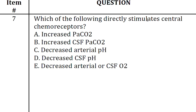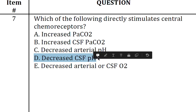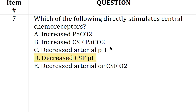The seventh question: which of the following directly stimulates central chemoreceptors? The answer is B, decreased CSF pH, which directly stimulates central chemoreceptors.